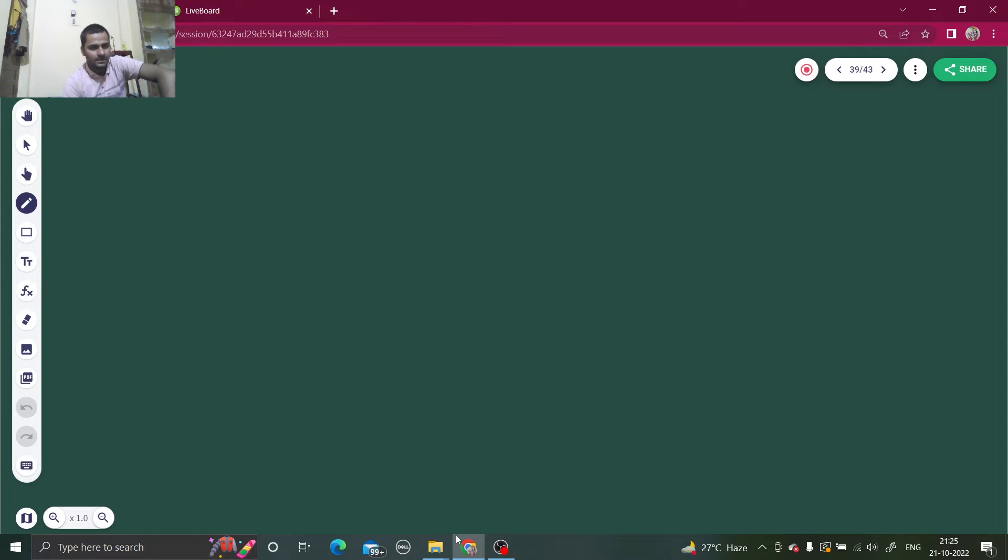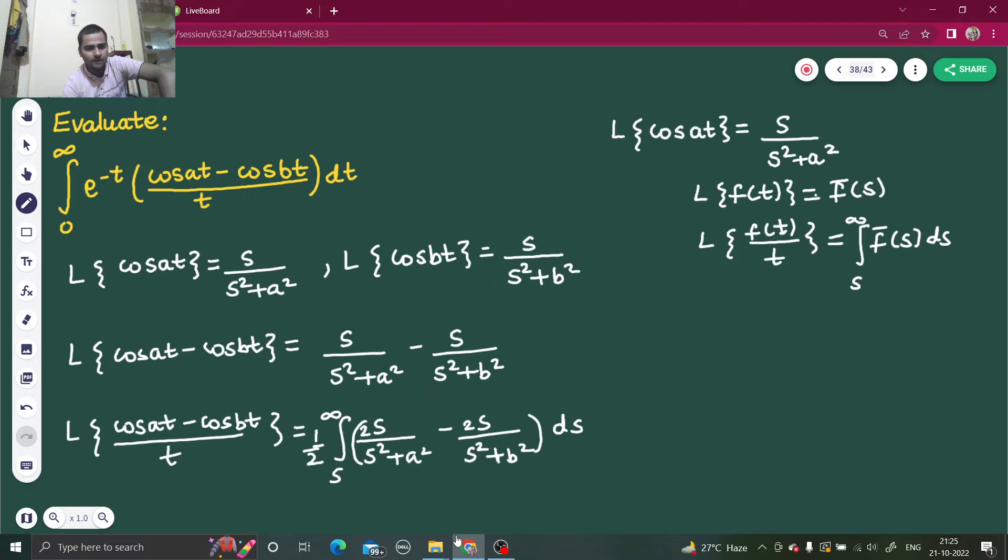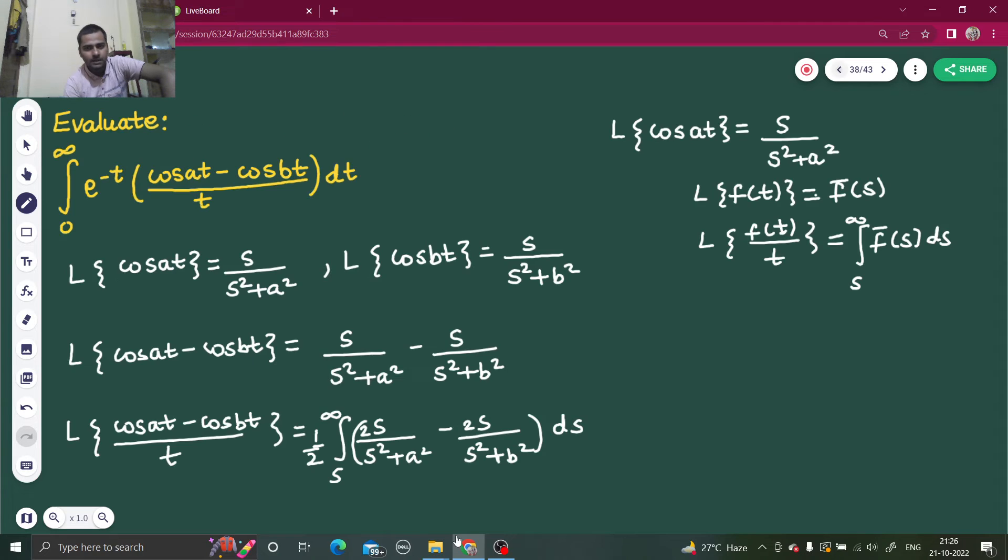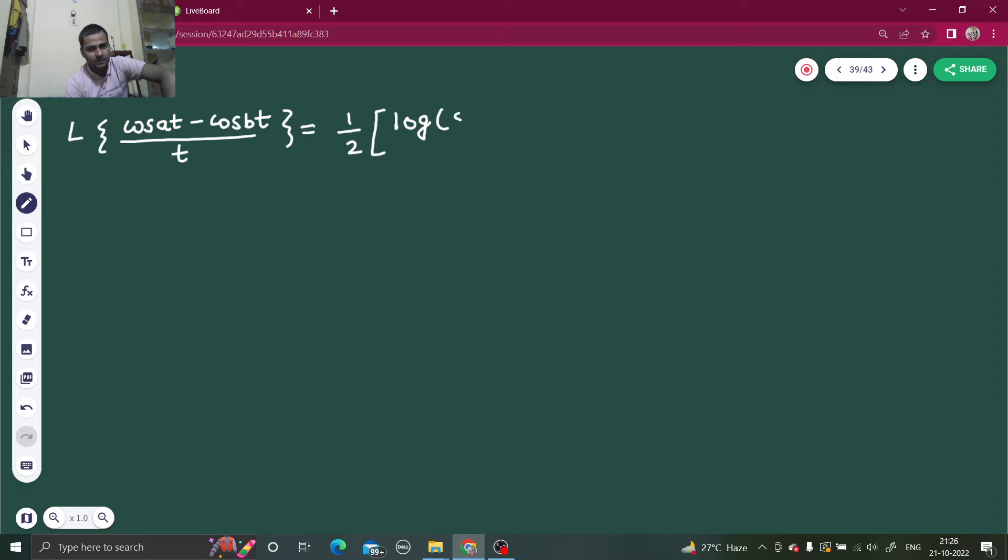So it's important to write LHS also because we are going to do something with that. So Laplace of cos at minus cos bt by t will be equal to 1 by 2 log s squared plus a squared minus log s squared plus b squared.